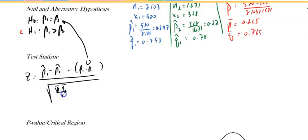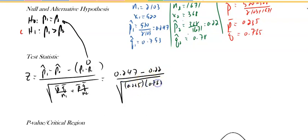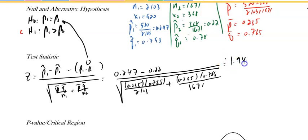So it's the square root of p-bar, which is 0.235, times q-bar, 0.765, divided by n1, which was 2,103, plus the same number divided by n2, which was 1,671. Make sure to extend that. Plug this in a calculator and I'll get roughly 1.94.